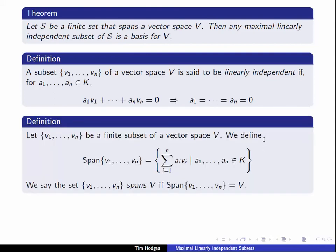Secondly, the span of a set V1 up to Vn is the set of all possible linear combinations of the Vi with coefficients in the field K. We denote this by the span of V1 up to Vn, and it's easy to see that this is a vector subspace. We say the set V1 up to Vn spans V if this span is equal to V. So in that case, any element of V can be written as a linear combination of these V1 up to Vn.